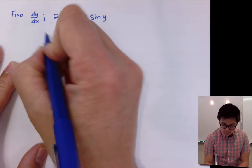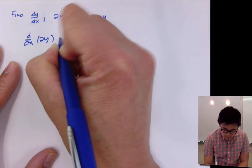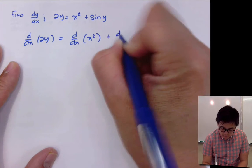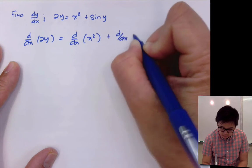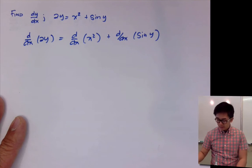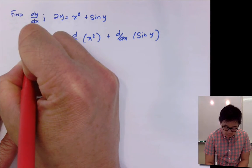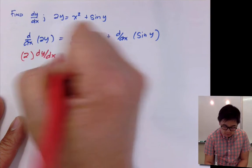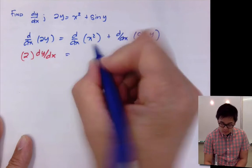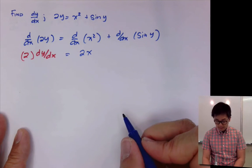Let's go ahead and take the derivative of each term: d/dx of 2y equal to d/dx of x squared plus d/dx of sine y. The derivative of 2y with respect to x uses the power rule, giving us 2, but we'll use dy/dx because we're differentiating in terms of x. The second term is simply 2x, and we don't need to put a dy/dx for this one.